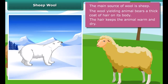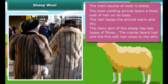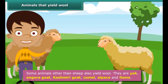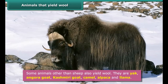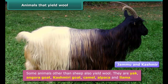The main source of wool is sheep. The wool-yielding animal bears a thick coat of hair on its body. The hair traps a lot of air. Since air is a poor conductor of heat, the hair keeps the animal warm and dry, allowing it to live in cold and harsh climates. The hairy skin of sheep has two types of fibers: the coarse beard hair and the fine soft hair close to the skin. The fine hair provides the fibers for making woolen clothes, and the coarse hair provides wool for making carpets.